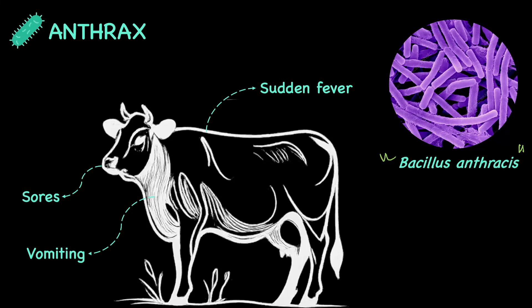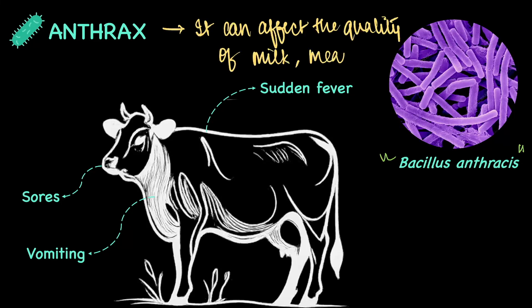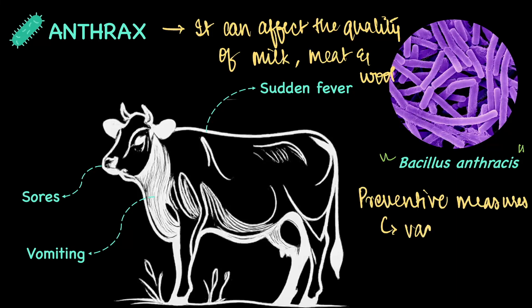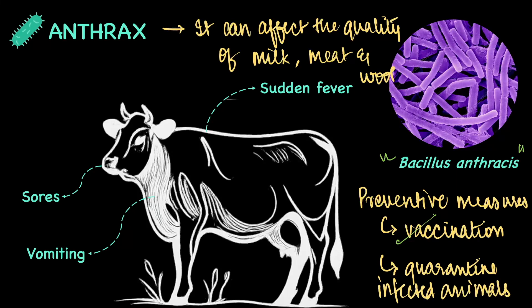This anthrax condition can even spread to us humans. Now because these animals are reared by farmers for their milk, meat and hide, when they fall sick it can affect the quality of these products. Which is why preventive measures are necessary. Vaccination is a common go-to preventive measure in this case. And if the animal falls sick, the infected animal must be quarantined to minimize the spread of the disease.